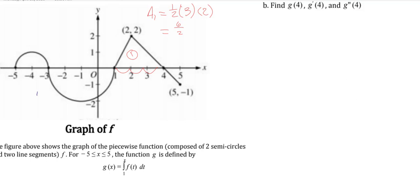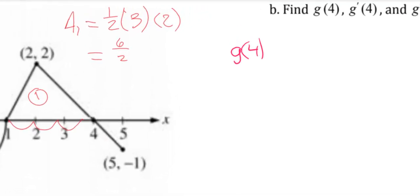g of 4, that's simply the integral from 1 to 4 of f of t dt. So when we have that, we're just going to roll that function out starting at 1 and going all the way to 4, and we can see that's the area here of this triangle that's above the x-axis.